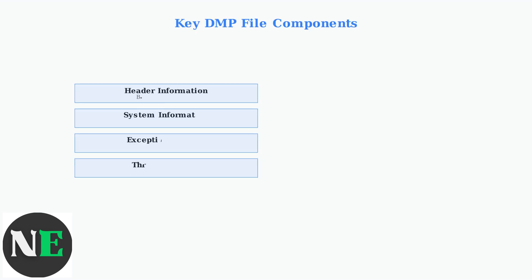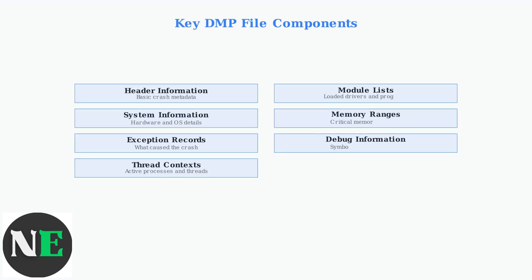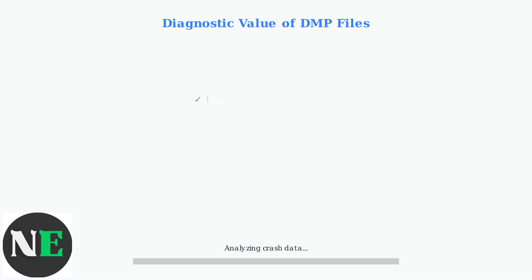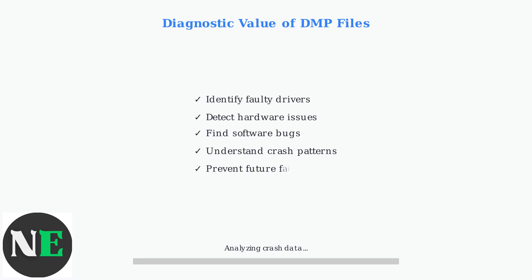Every DMP file contains specific components that provide different pieces of the puzzle. The header contains basic crash information, while exception records detail exactly what went wrong. These dump files are invaluable for diagnosing system problems.